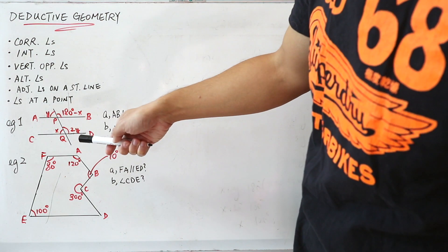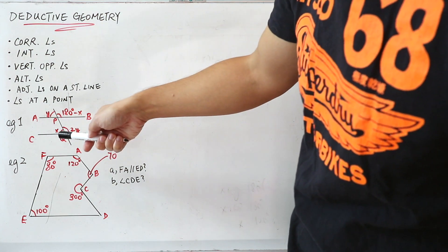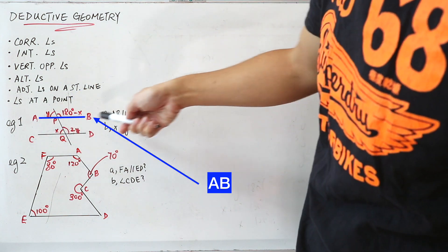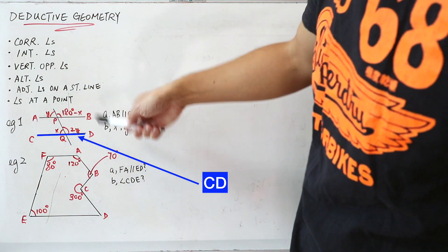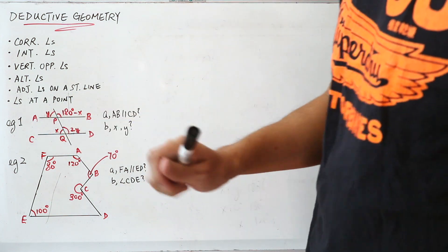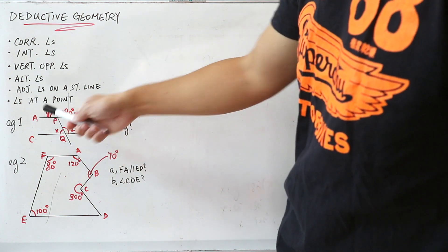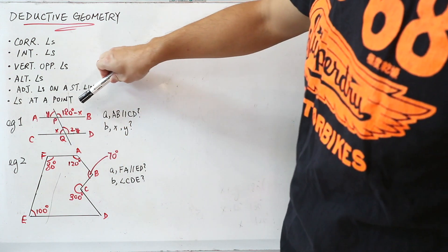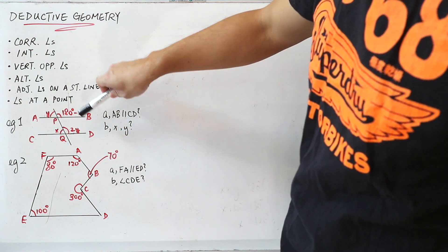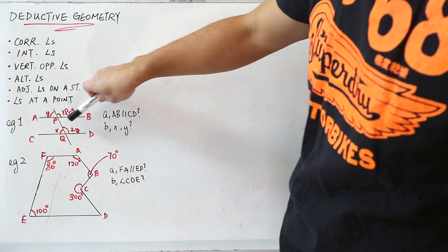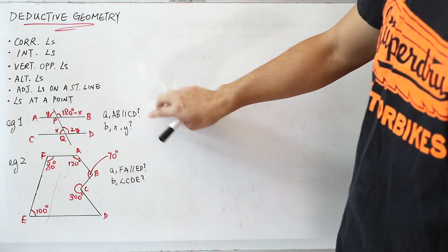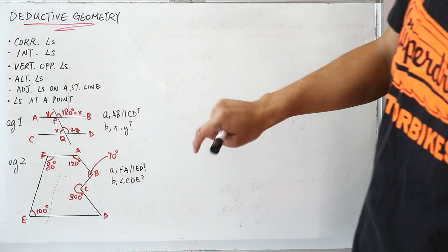Example number one. You're given a figure with three lines: AB, CD, and PQ. You're also given some angles: Y, 180 degrees minus X, 2Y, and X. This example has two parts, part A and part B.